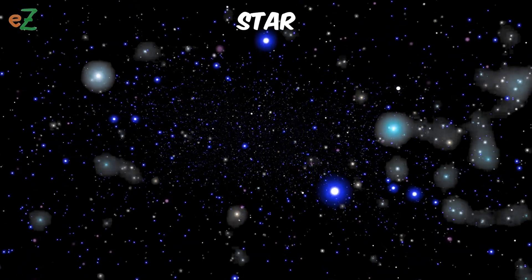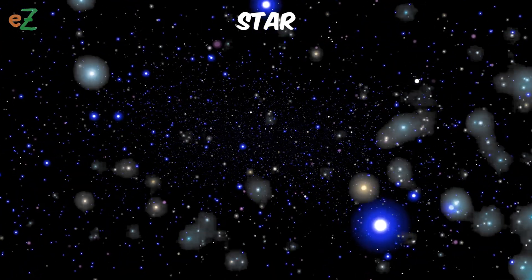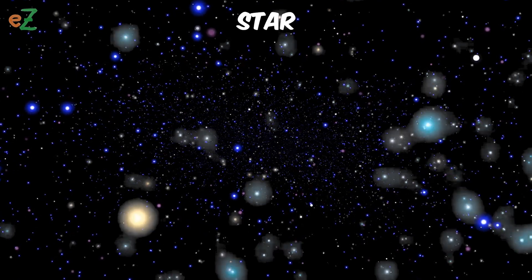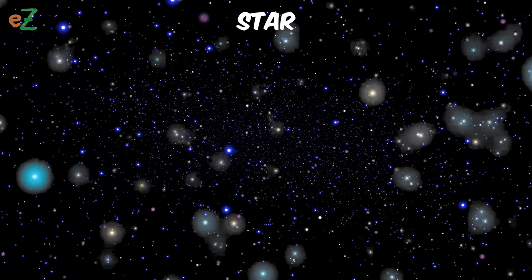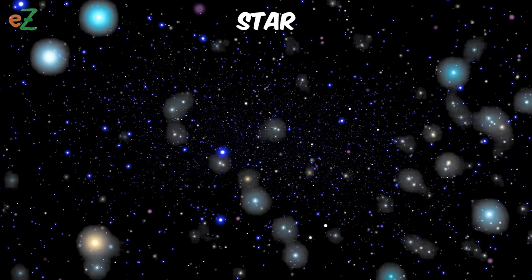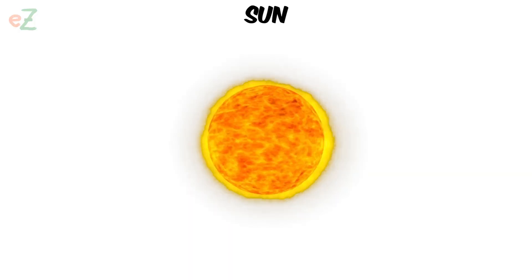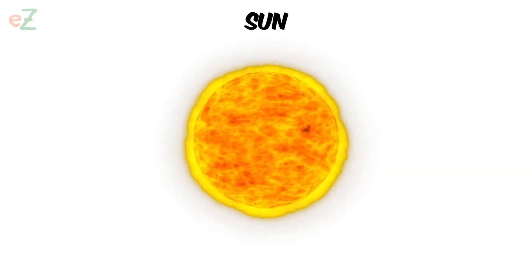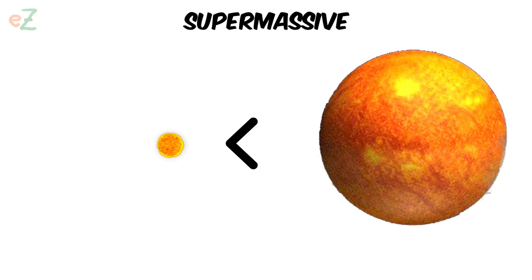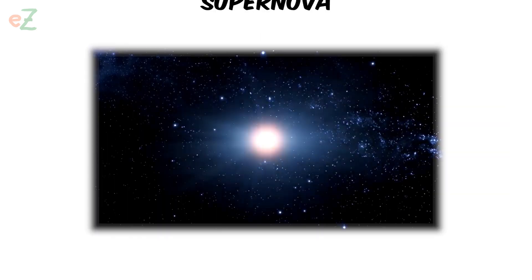Star. A ball of shining gas made mostly of hydrogen and helium held together by its own gravity. Turning hydrogen into helium creates the energy that makes stars shine. Sun. The star in the center of our solar system. Supermassive. How we describe objects that have a million times, or more, mass than our sun. Supernova. The explosion of a star that makes it as bright as a whole galaxy.